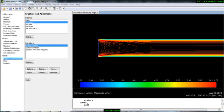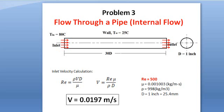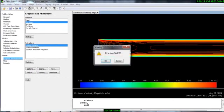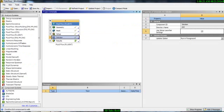Now we will see the 3D problem. In our problem, the diameter of the tube is 1 inch and the length is 30 inches. Previously we did a 2D simulation, and now we will do exactly the same problem but in 3D. To do this, close Fluent and go to Workbench, then open another Fluent there.